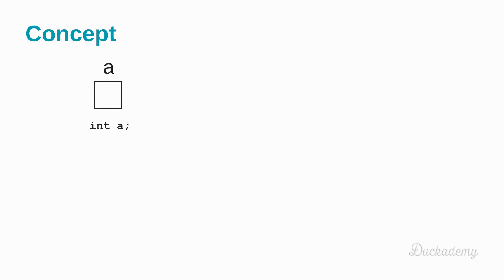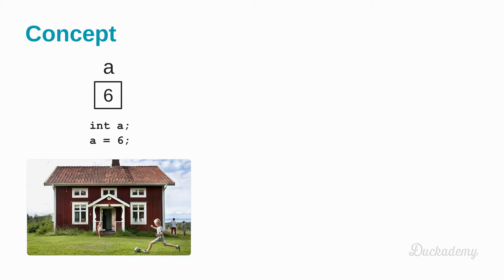Until this point we saw that these variables are simple variables, so they can be described like a box with a name. This box can hold exactly one value. If we assign a value to a variable, then this value will be inside this box. It's very similar to a family house that can contain one family.